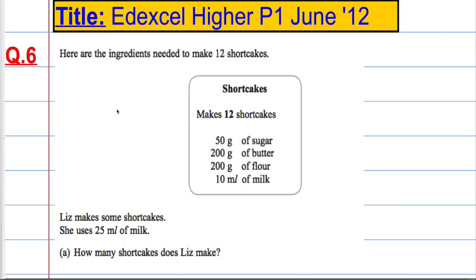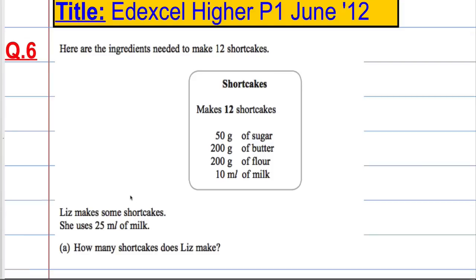Question 6 is a typical proportion question and we are given the ingredients needed to make 12 shortcakes. There we have it there. Liz makes some shortcakes and she uses 25ml of milk. How many shortcakes does she make?